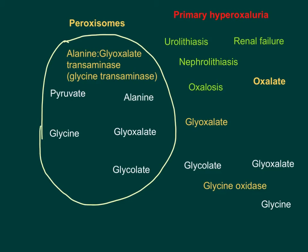Note that primary hyperoxaluria is because of a defect in a metabolic enzyme involved in glycine catabolism. Glycine undergoes a deamination process by an enzyme called glycine oxidase. Starting from the right lower corner of the diagram, glycine amino acid is oxidized — deamination of glycine into glyoxalate — done by glycine oxidase enzyme, with an ammonium ion released.